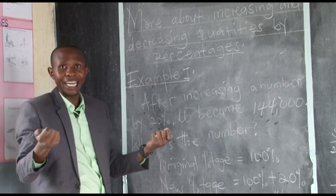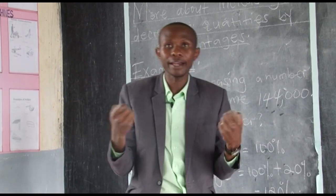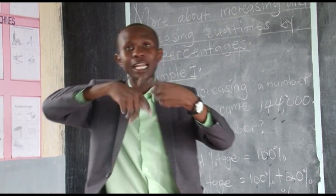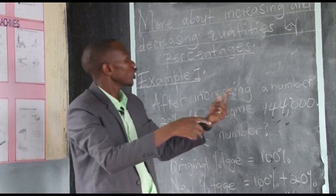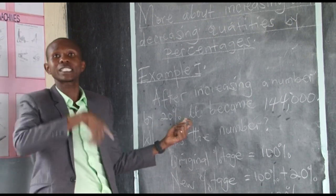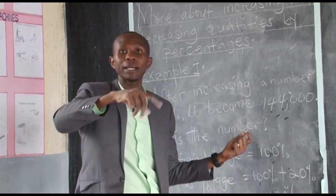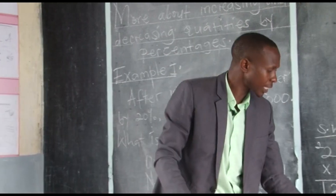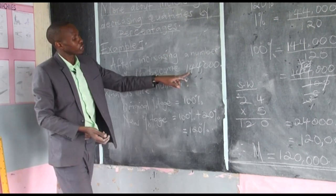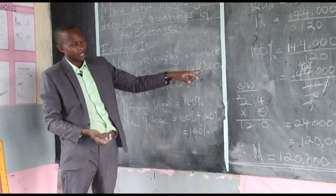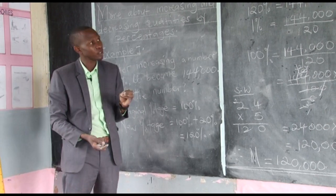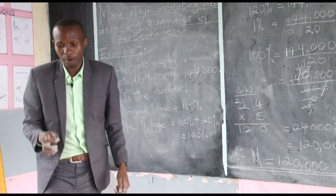For those following us: yesterday's lesson was about directly increasing a number. But here, they have given you the increased number and want you to find the number before increasing. They increased the original number by 20% to get 144,000. If you want to verify whether you are right or wrong, do a side-work check.